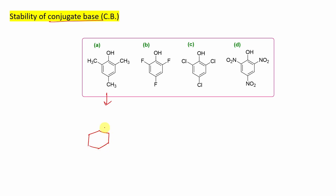The first compound is 2,4,6-trimethylphenol. I am drawing here the conjugate base structure. If you look at the methyl group, the methyl group provides a +I effect, or you can say hyperconjugation — both. So it is electron-donating. Now if the benzene nucleus gets more electron density from the methyl groups, will it like to accept more from the oxygen minus (phenoxide)? No. So its stability is relatively less.